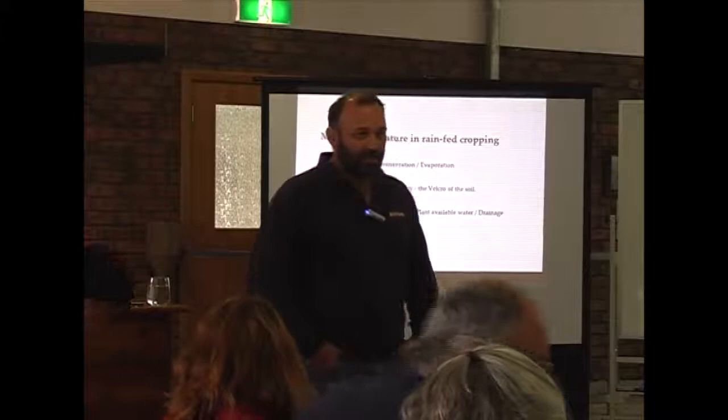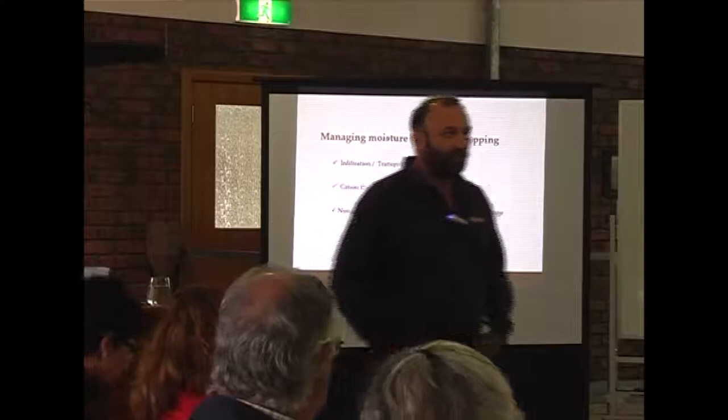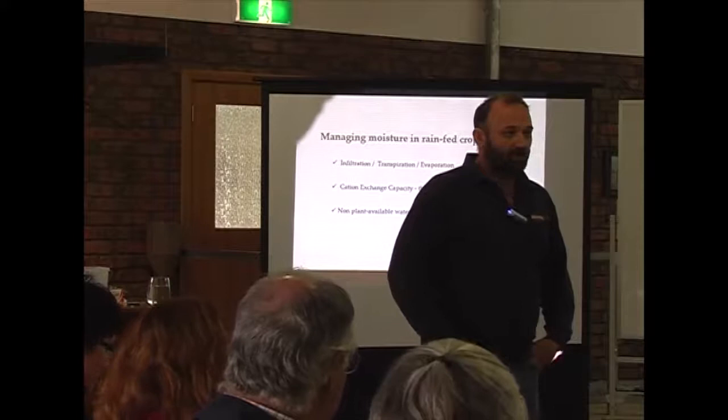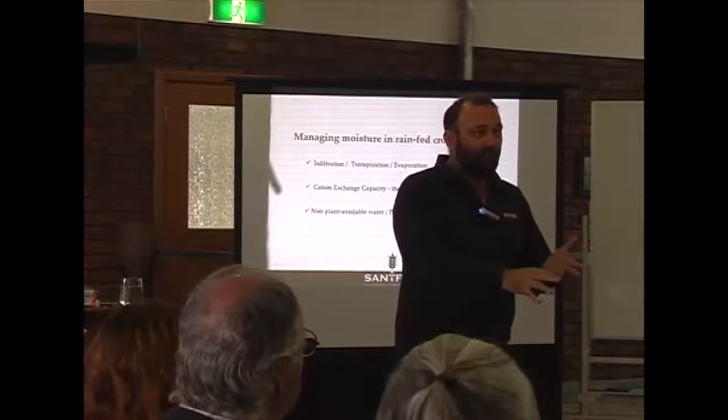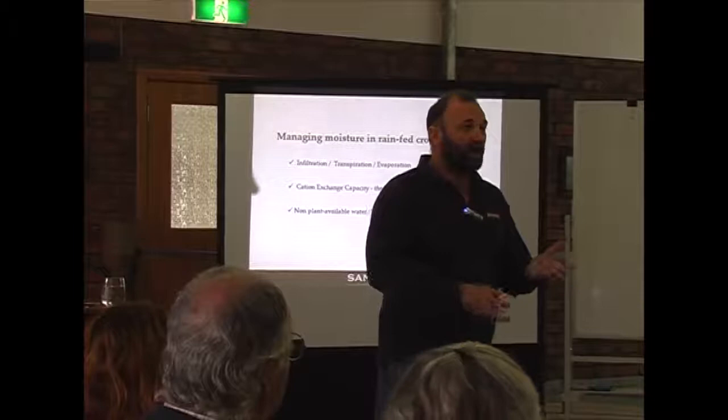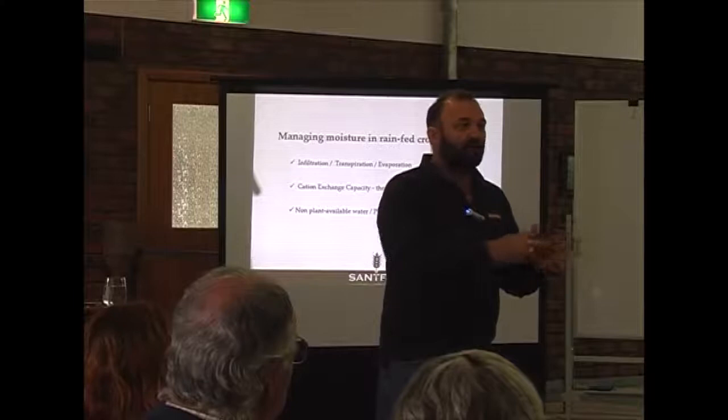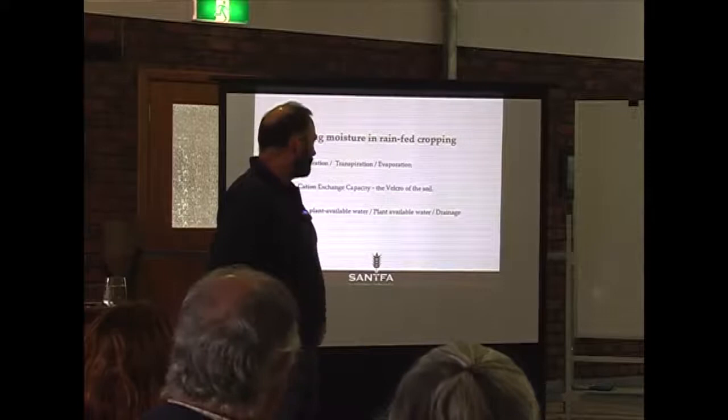You can think about cation exchange capacity as being the Velcro in the soil. Things like water and nutrients are like the fluff. In a clay soil, you'll have more of that Velcro. At some stage, the fluff comes in and the Velcro starts sticking to it, but eventually it becomes saturated with fluff and then more fluff will just drain off. When the plant's roots want to extract that moisture, they'll start pulling it off, but they'll never be able to get it all. We'll also talk about non-plant available water versus plant available water, and how drainage happens.